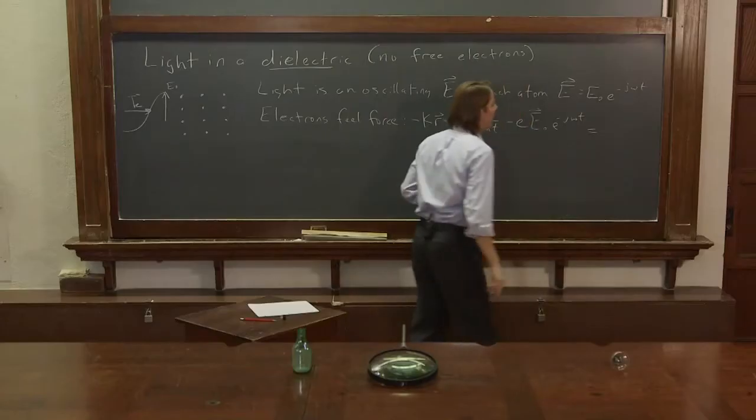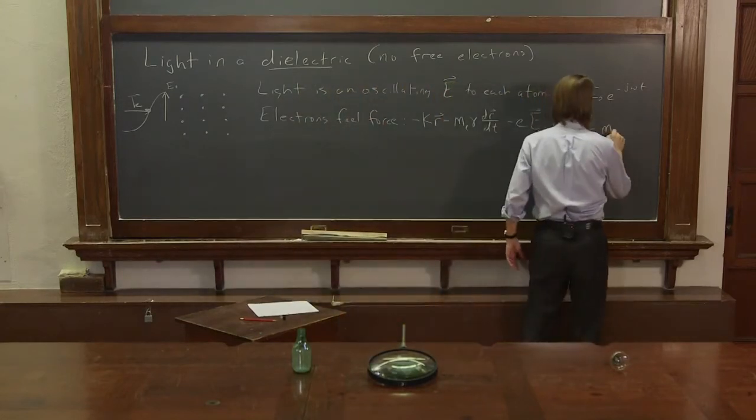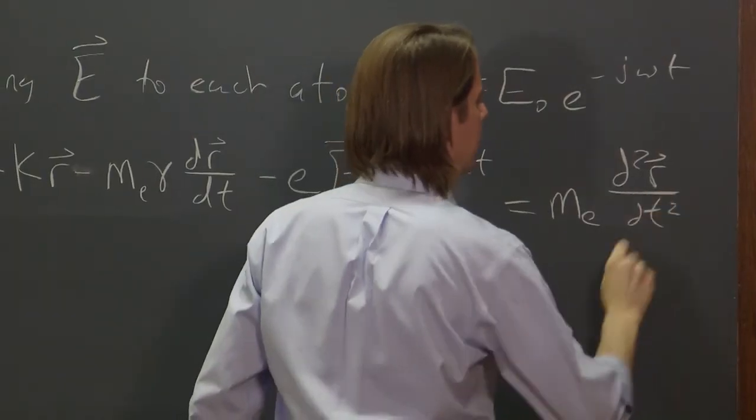It's oscillating, of course. And then, finally, ma, the mass of the electron, times d2 r dt2.